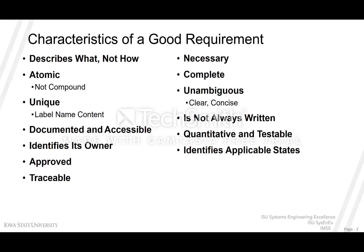Atomic, or not compound. This means essentially one requirement per statement. You can't have a paragraph or sentence with several elements in it. For example, a statement could say 'the system should weigh no more than 50 pounds and be 20 inches in length and 12 inches across.' In reality, those are three separate requirements and should be treated as three separate atomic elements.